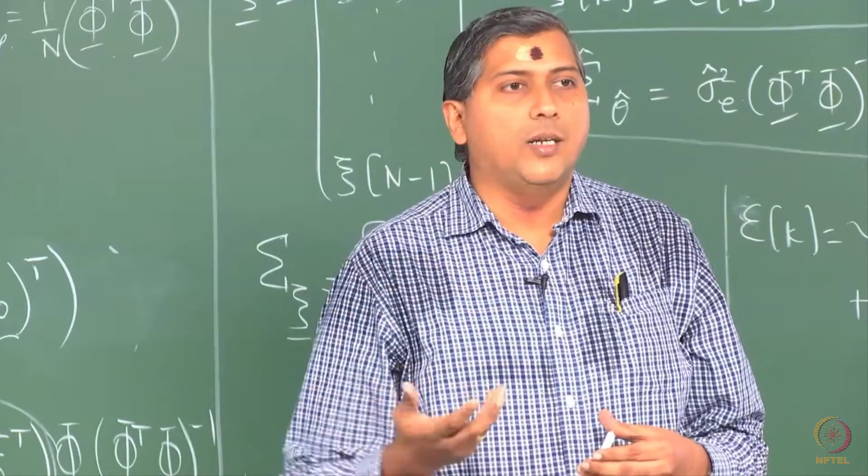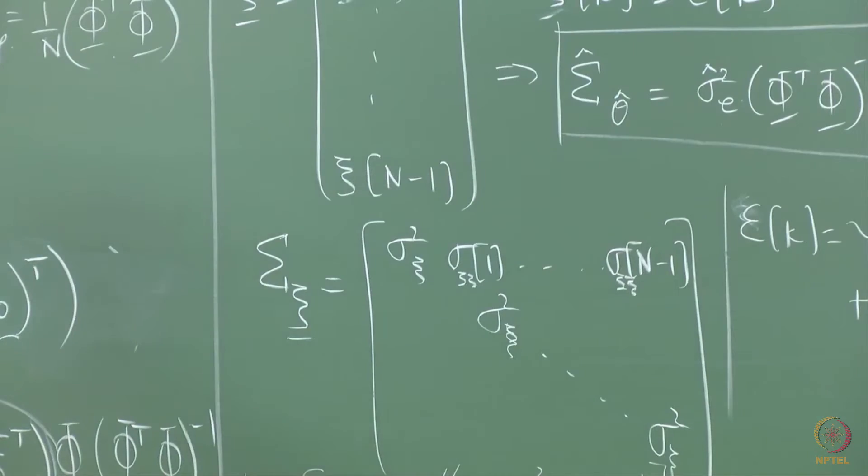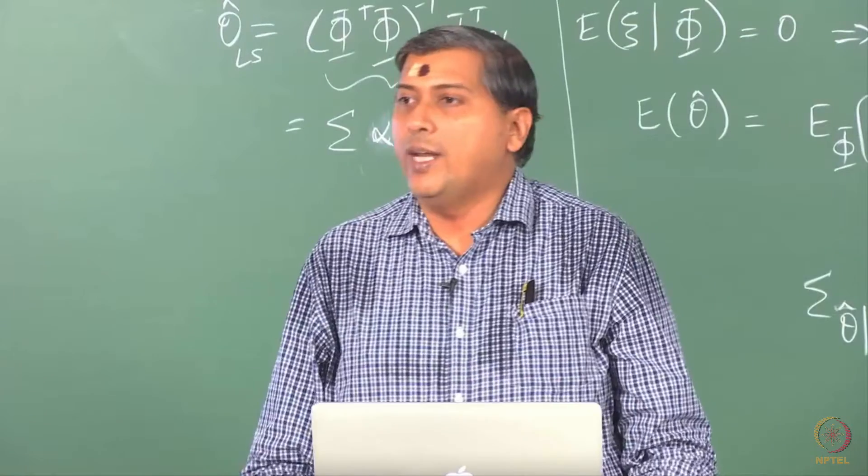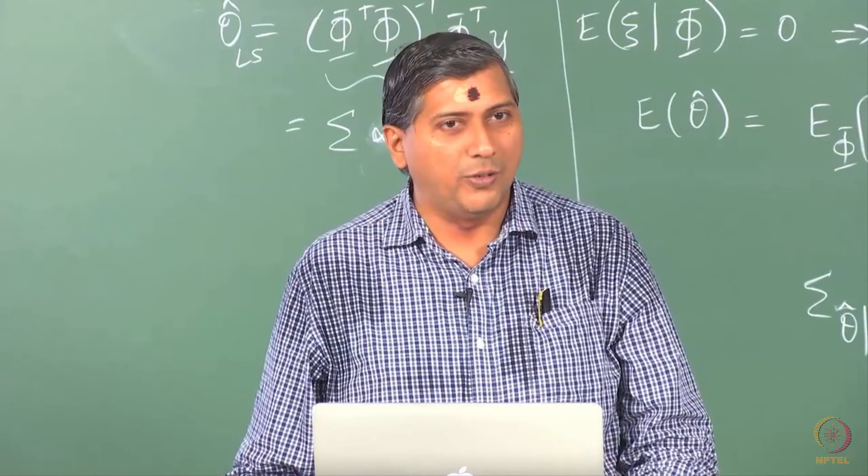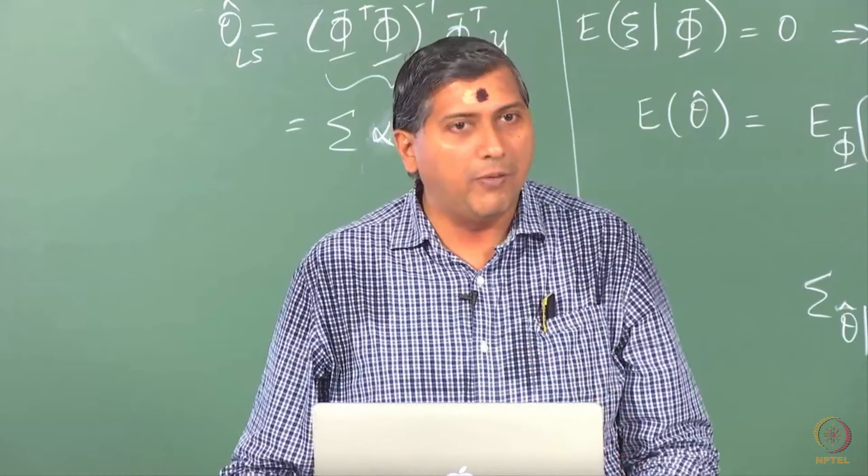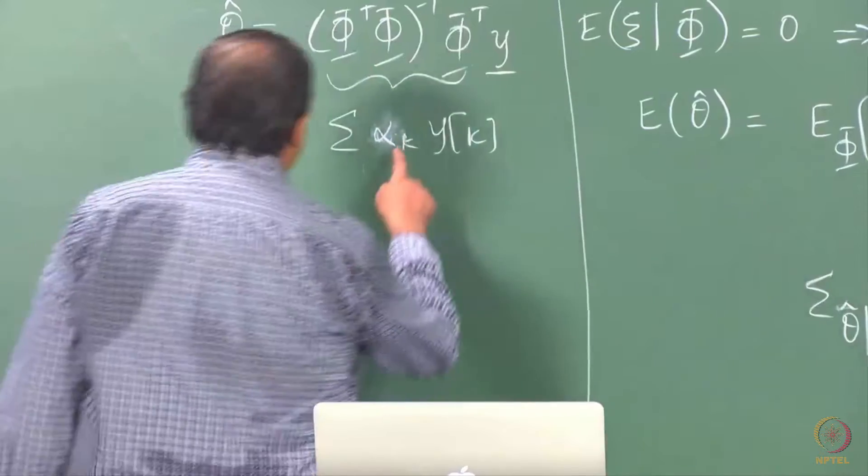Now in order to determine the distribution of theta hat, all I have to do is invoke CLT. If y k has Gaussian errors, no worries. Even for finite n, theta hat will have a Gaussian distribution, joint Gaussian distribution. Remember your theta hat is a p by 1 vector. You should remember that. So although I write it this way, you have to be careful.